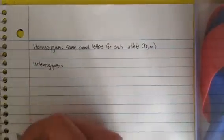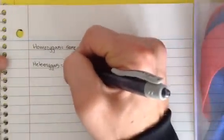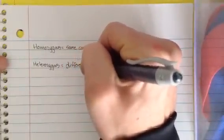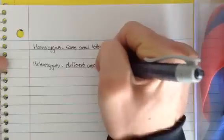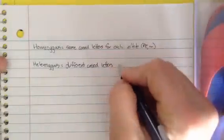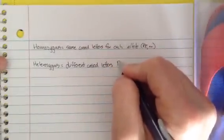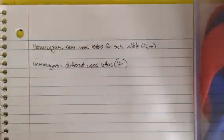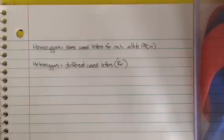So it just means that they got either the dominant or recessive trait from both the mom and the dad. Hetero, as we well know, means different. And so what we're going to say here very simply is they have different cased letters or alleles. And so our example would be big R, little r. Perhaps they got the big R from mom and the little r from dad or vice versa. So those are our first two words.